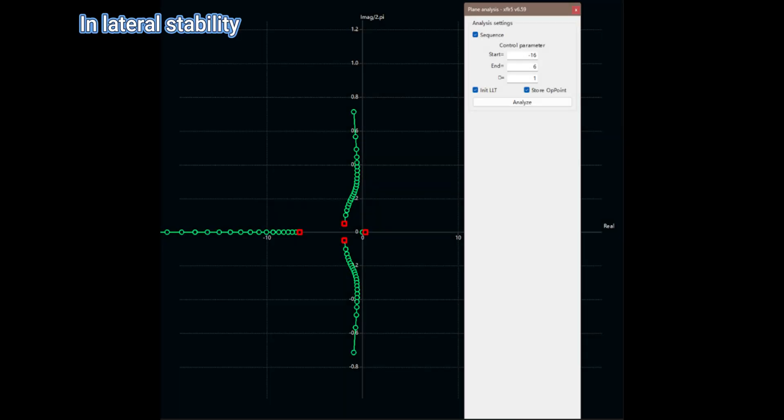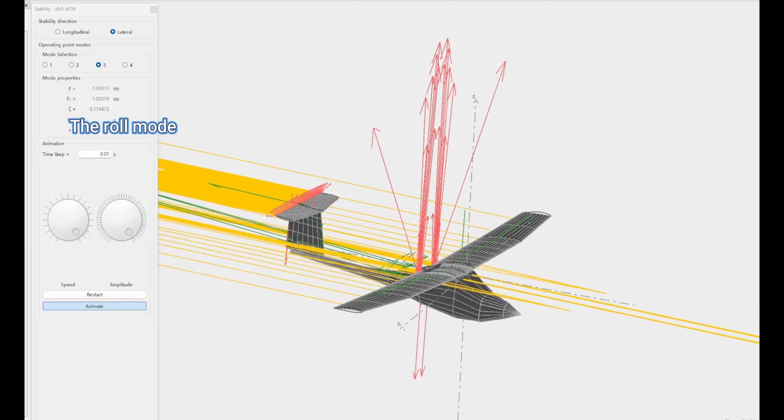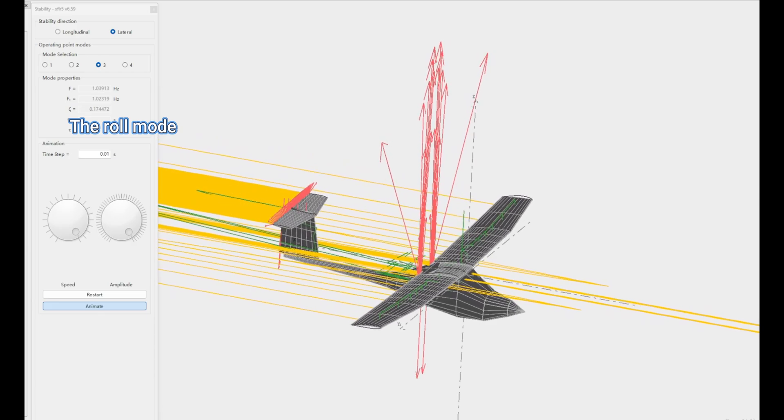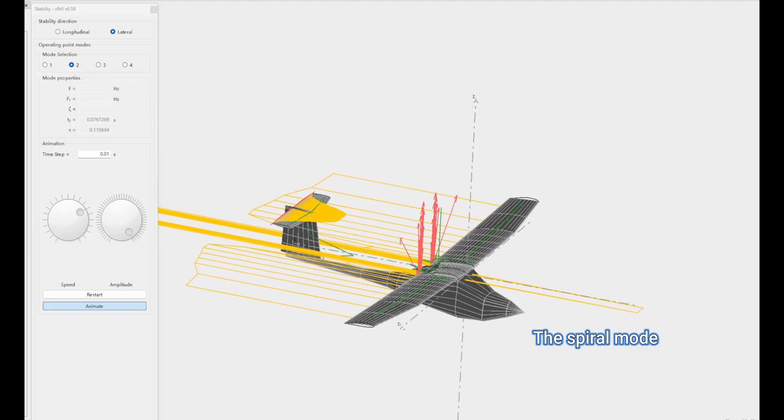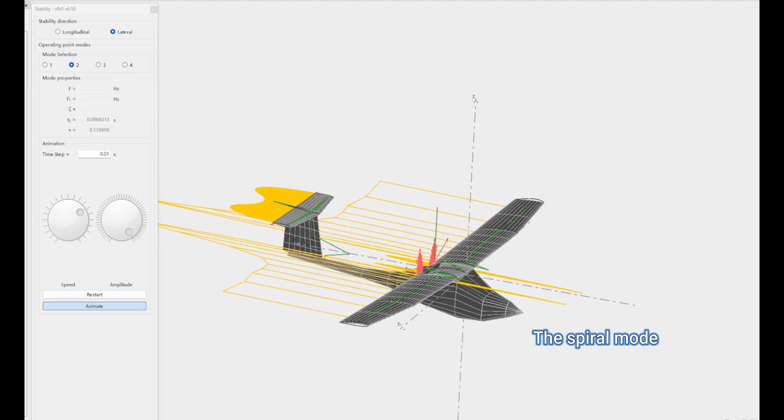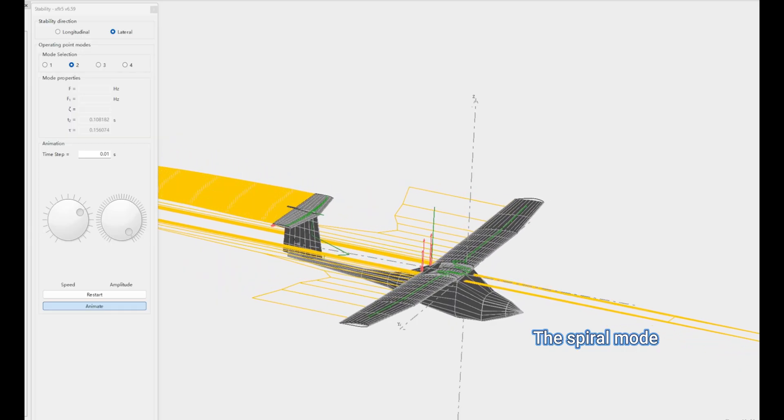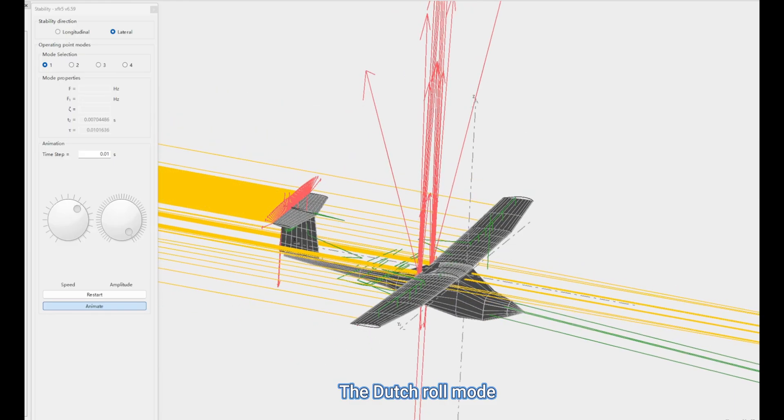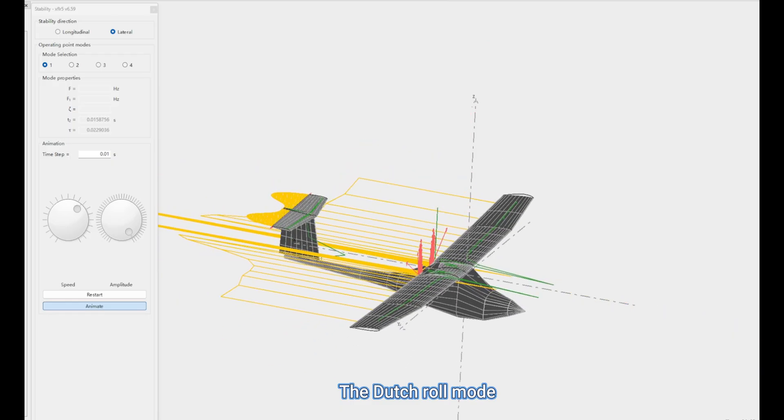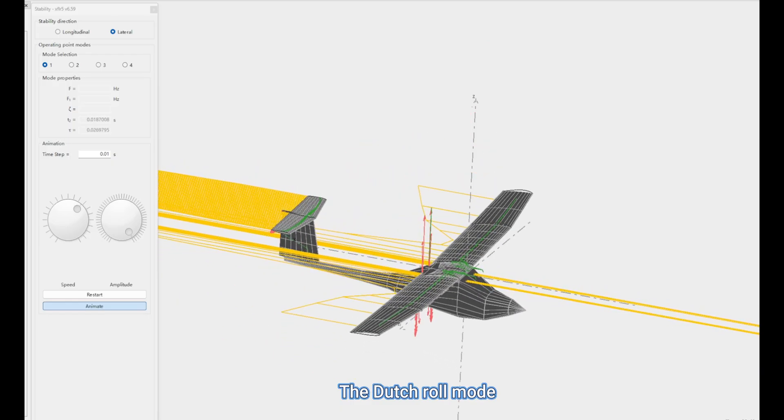In lateral stability, there are three modes. The one farthest to the left is the roll mode, a purely real route indicating ample roll damping. The mode closest to the center is the spiral mode, slightly to the left of the imaginary axis, showing weak spiral stability. At large bank angles, there is a very slight divergence tendency, but it can be corrected quickly with trim. The other pair of complex conjugate routes corresponds to the Dutch roll mode. Since their real parts are to the left of the imaginary axis and do not cross it, this indicates moderate damping and stable behavior.